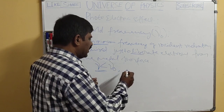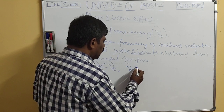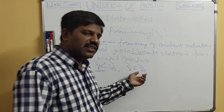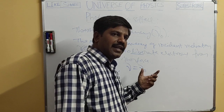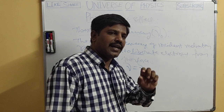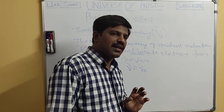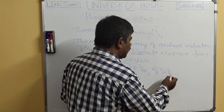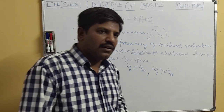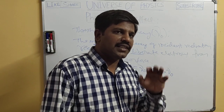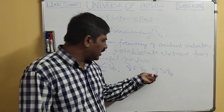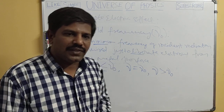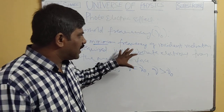Suppose the incident radiation frequency is equal to ν₀, meaning the incident radiation frequency equals the threshold frequency. And if the incident radiation frequency is greater than ν₀, then ν₀ is the smaller frequency — that is the threshold frequency — and if incident radiation frequency is greater than ν₀, we can definitely get electrons from the metal surface.